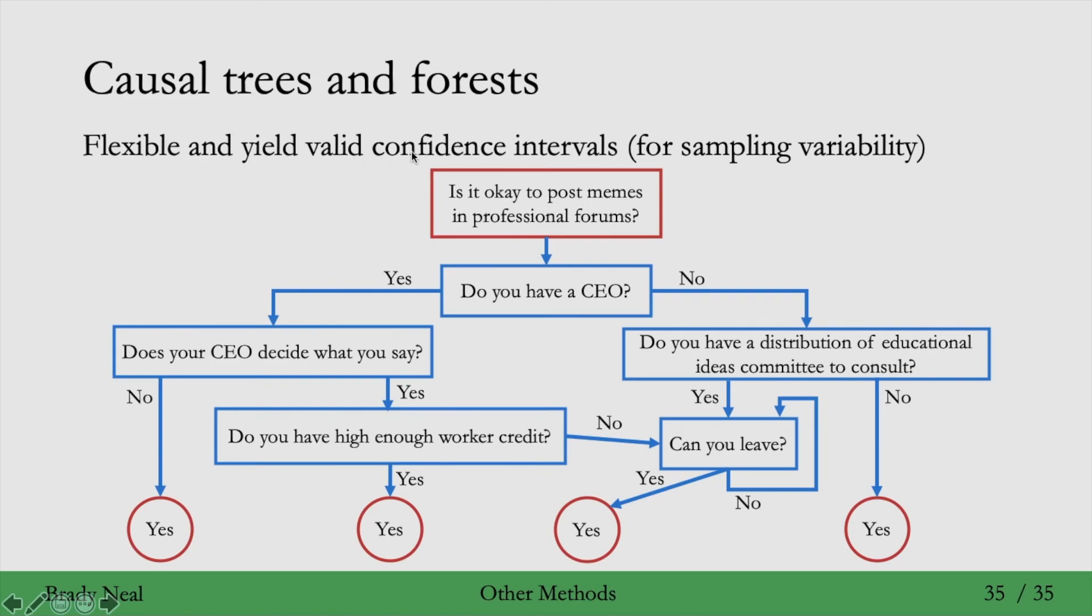they yield valid confidence intervals. So everything we've seen so far, we estimate a point estimate for the ATE or for the CATE. But there's some uncertainty there because we only have finite data. You could imagine putting intervals around that point to convey that if we had gotten a different sampling of the data, the points might fall somewhere else, and it could be that they mostly fall in that interval. And this interval is supposed to encompass sampling variability. It's not supposed to encompass things like what would happen if we had unobserved confounding, which is what we'll see next week.